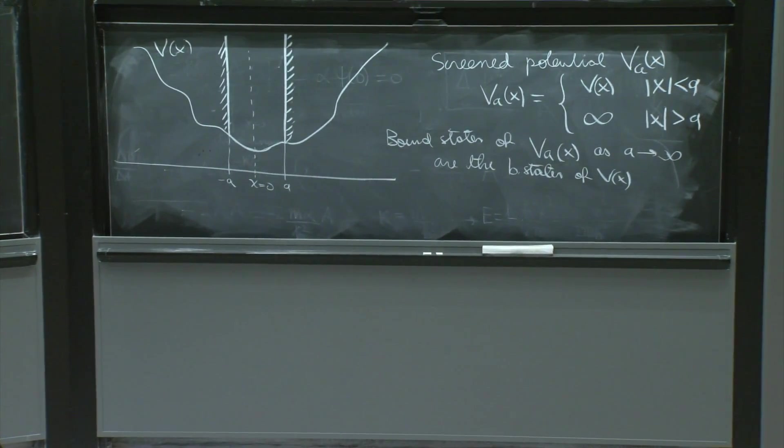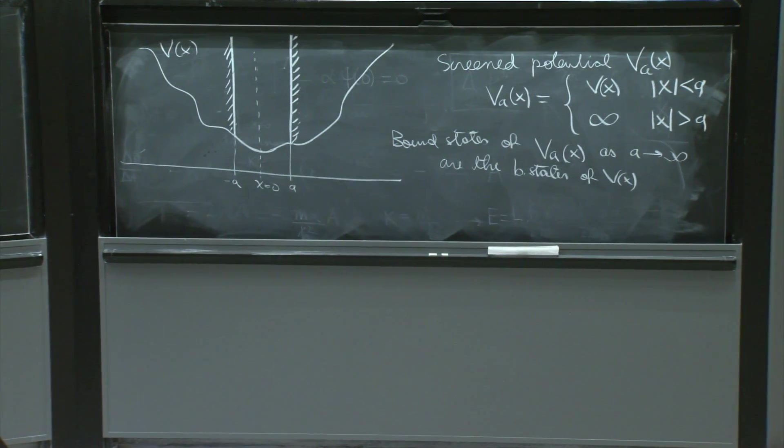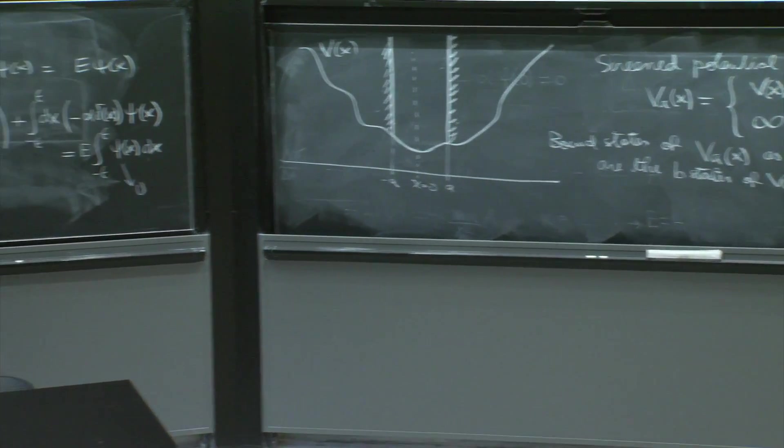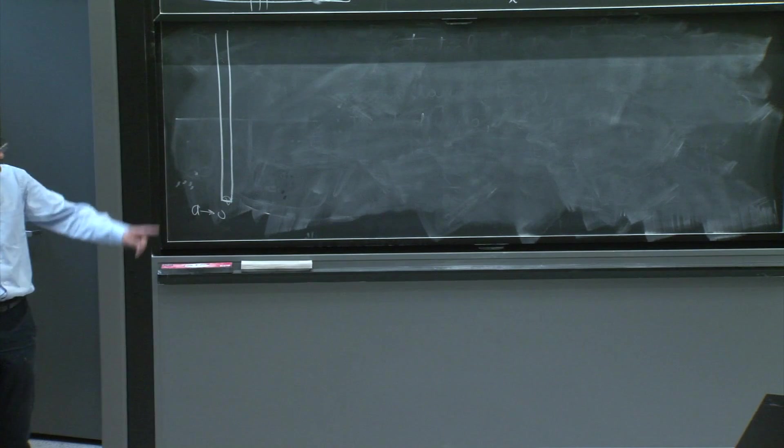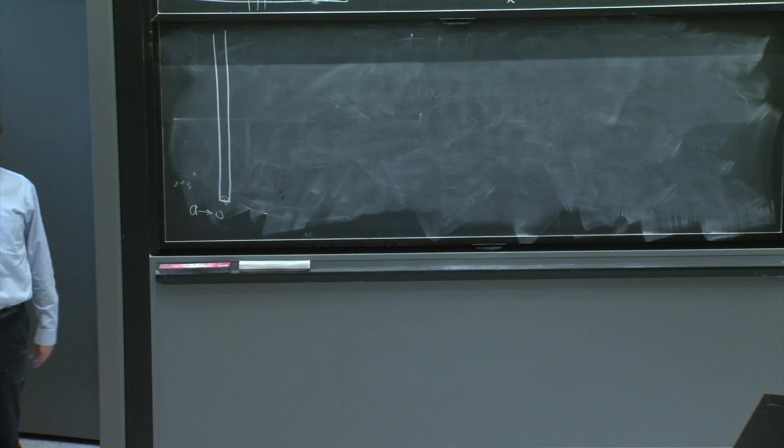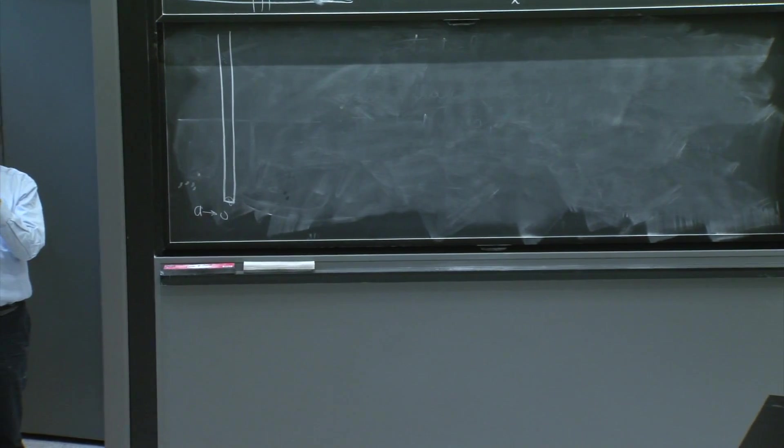And then I can use the states of the infinite square well potential. As a goes to 0, yes, you have a ground state with no nodes, a first excited state with one node. And all the states have the right number of nodes because they are the states of the infinite square well, however narrow it is.